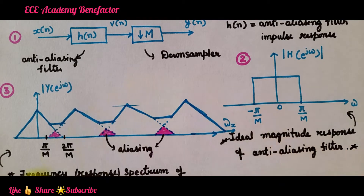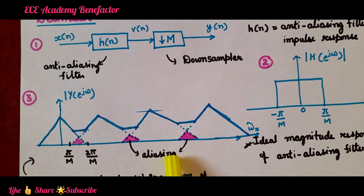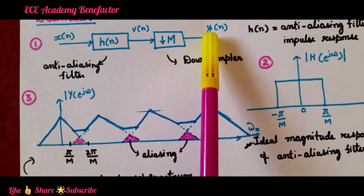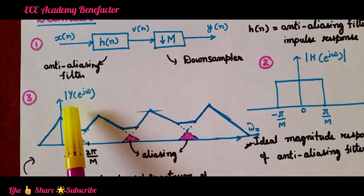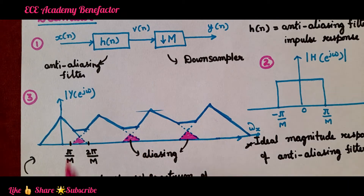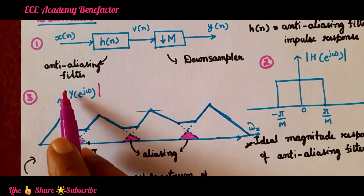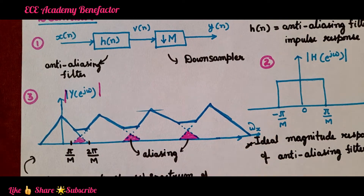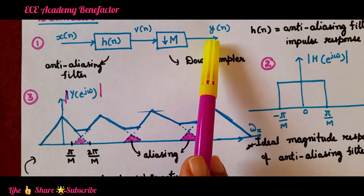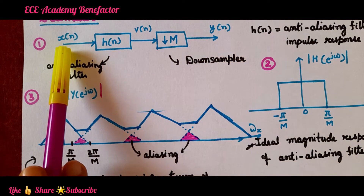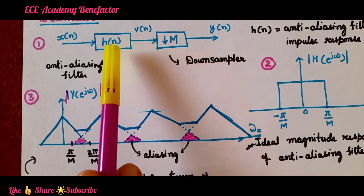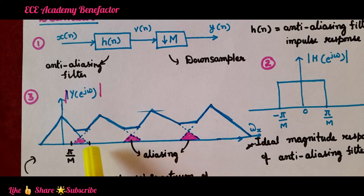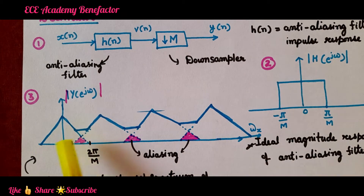What is the need for this filter before down sampling? Let us see the spectrum of the output signal. This is a frequency spectrum — Y of n is the output signal. If we take its frequency spectrum, it is designated by mod of Y e to the power j omega. This is the frequency spectrum of the down sampled signal y of n, where x of n is the input that is down sampled.